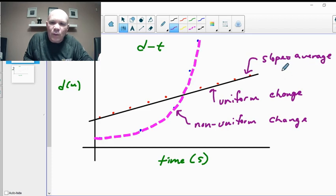With a DT graph, we will find that the slope is the velocity. And the velocity is how much the increase in the y variable or the distance over the change in time.